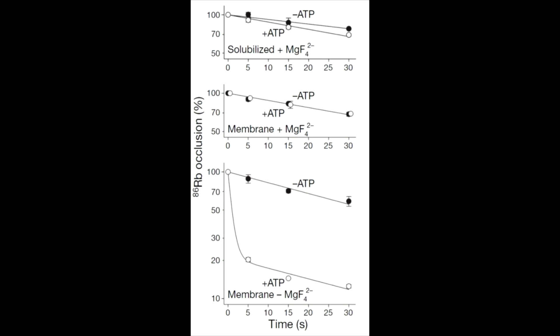In the top graph, the same parameters are used. However, the protein has been taken out of the membrane. This experiment was conducted to make sure the protein acted the same way in and out of the membrane in a stable form.